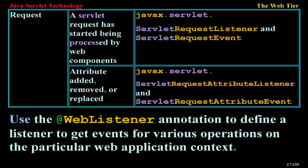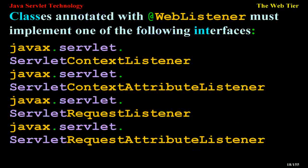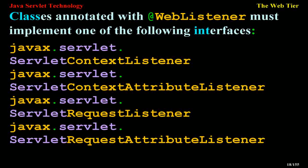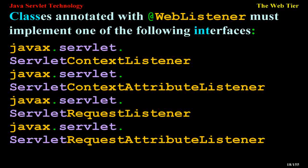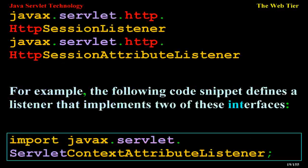Use the @WebListener annotation to define a listener to get events for various operations on a particular web application context. Classes annotated with @WebListener must implement one of the following interfaces: javax.servlet.ServletContextListener, javax.servlet.ServletContextAttributeListener, javax.servlet.ServletRequestListener, javax.servlet.ServletRequestAttributeListener, javax.servlet.http.HttpSessionListener, or javax.servlet.http.HttpSessionAttributeListener.